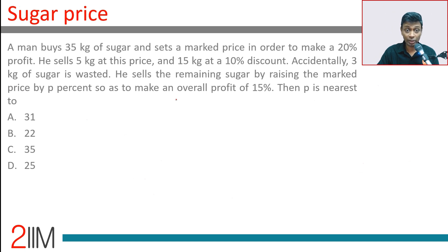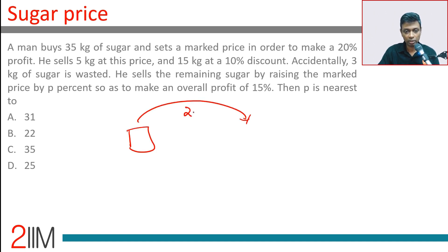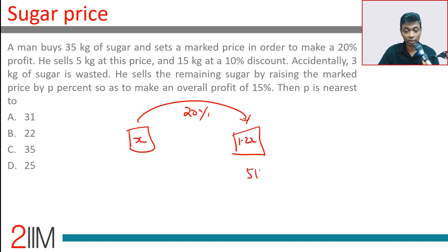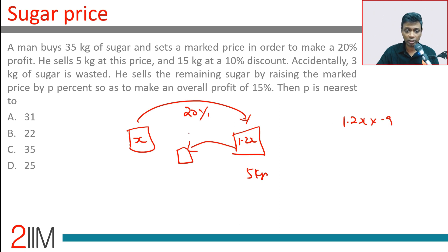A man buys 35 kilograms of sugar and sets a marked price to make a 20% profit. He buys at x, marks it up to 1.2x, and sells 5 kg at this marked price. He also sells 15 kg at a 10% discount — that's 1.2x × 0.9 = 1.08x.